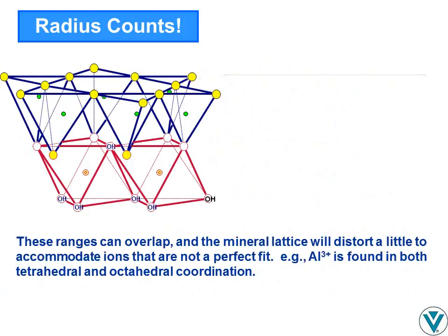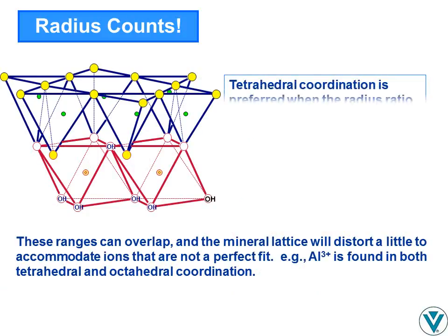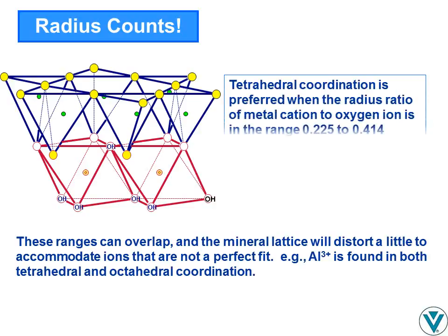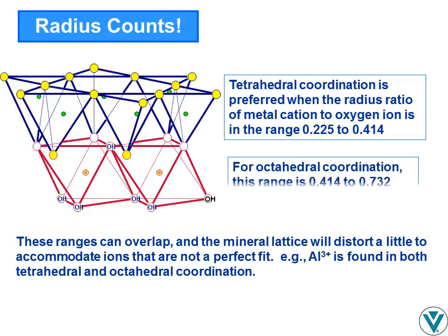Tetrahedral or fourfold coordination is theoretically preferred when the radius ratio of metal cation to oxygen ion is in the range of 0.225 to 0.414. For octahedral or sixfold coordination, this range is 0.414 to 0.732. In nature, these ranges overlap to some extent and the mineral lattice will distort to a limited degree to accommodate ions that are not a perfect fit. Aluminum, for example, is found in both tetrahedral and octahedral coordination.